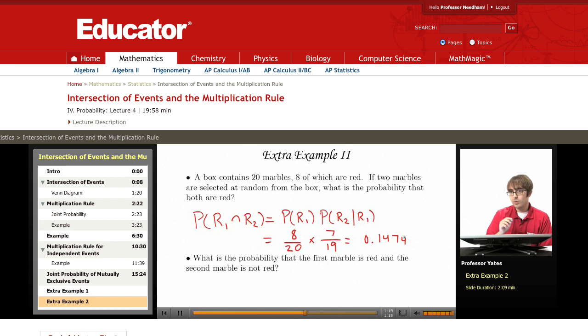Now we can sort of mix it up a little bit. What is the probability that the first marble is red and the second marble is not red? I'm using that complement notation there to denote not red. So this is the probability that the first marble is red times the probability that the second marble is not red given that the first marble is red.